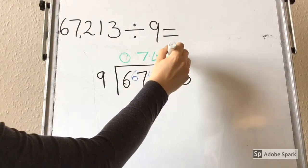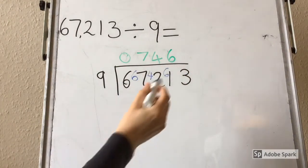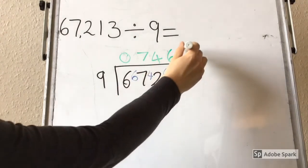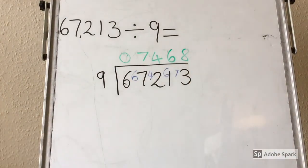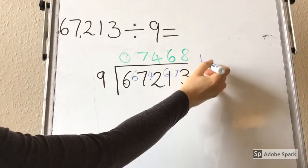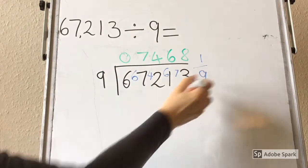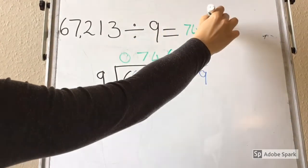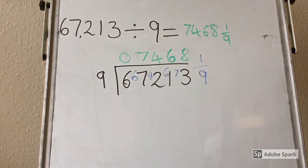9 goes into 61 six times, because 9 times 6 is 54, and there are 7 left over. 9 times 8 is 72, so it goes into 73 eight times, but there is 1 remainder. So remember to express this as a fraction, it should be 1 ninth. So overall, you should have 7,468 and 1 ninth.